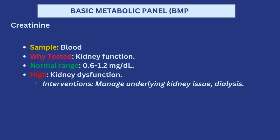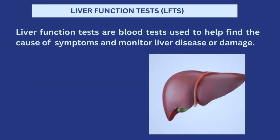If glucose is high, that is hyperglycemia, which could point towards diabetes. In that situation you give oral hypoglycemic agents like metformin or glibenclamide, or insulin depending on what the patient has been placed on. If glucose levels are low, that is hypoglycemia — you want to get the glucose level back up, either by giving glucose orally or IV dextrose. Finally, creatinine levels are tested to evaluate kidney function. Normally it should be between 0.6 to 1.2 mg/dL. If higher than normal, there is kidney dysfunction and you may need to manage the underlying kidney issue or consider dialysis.